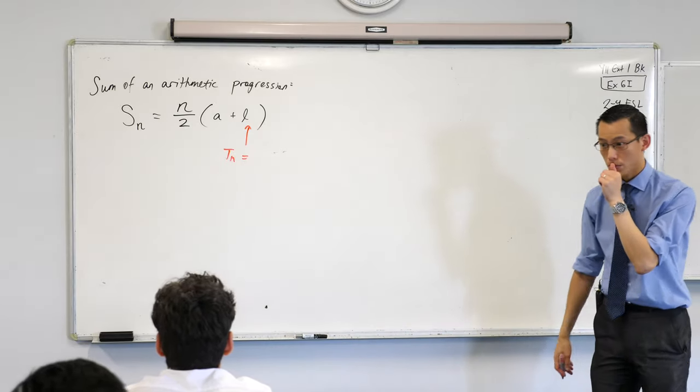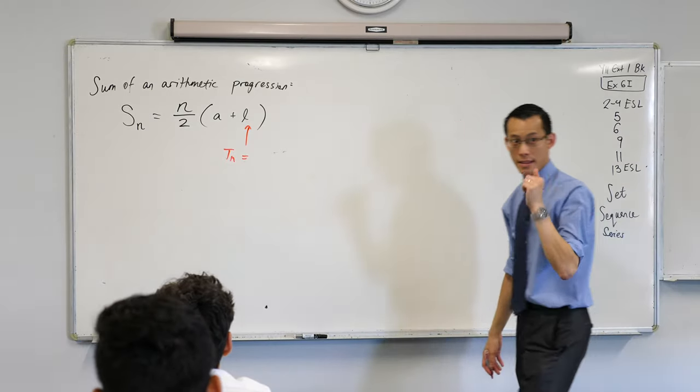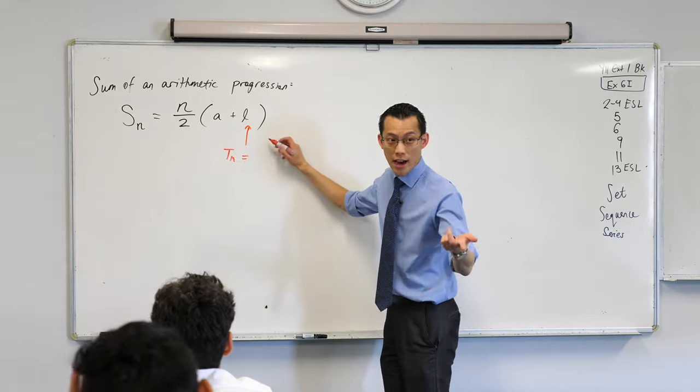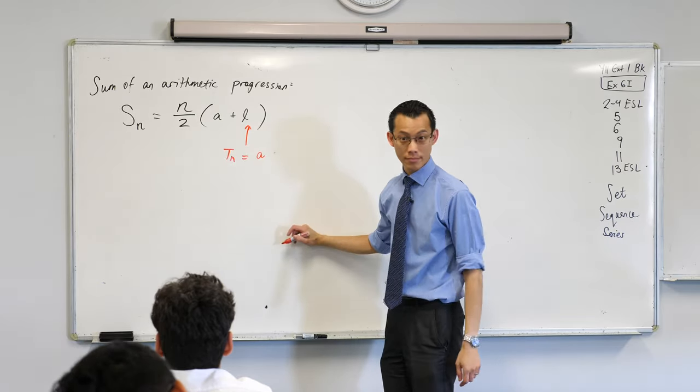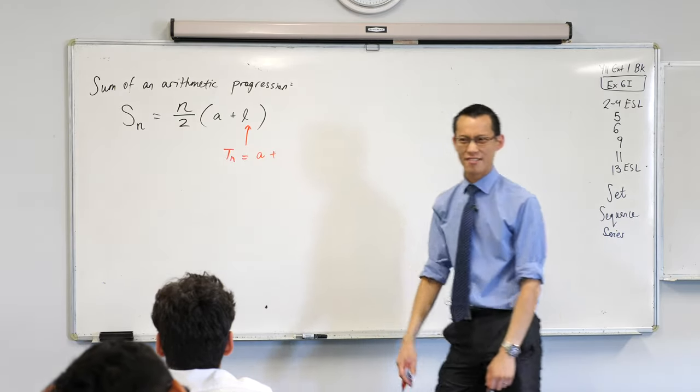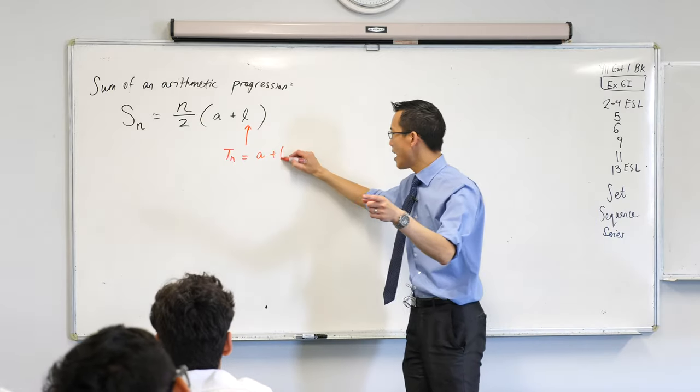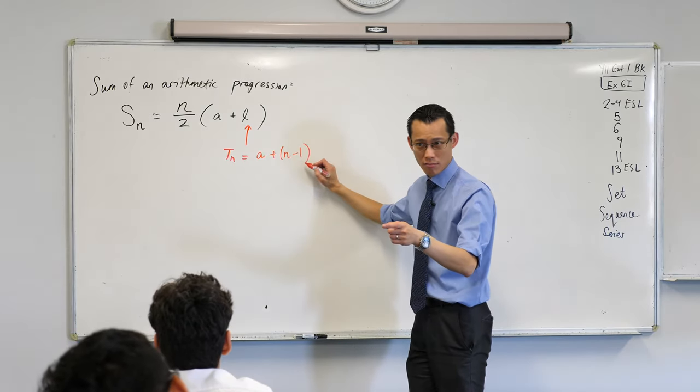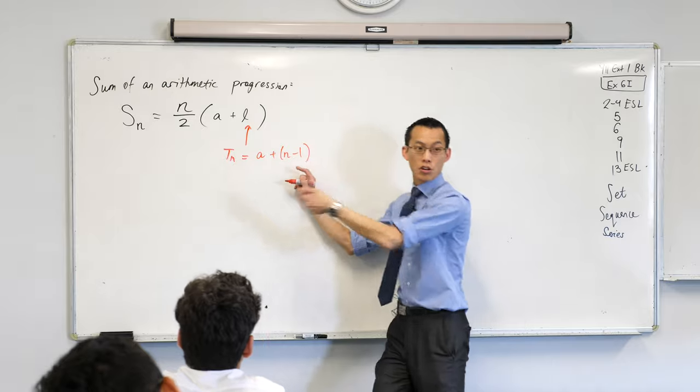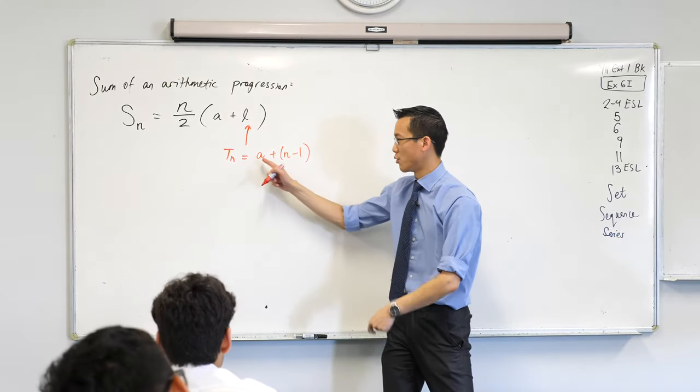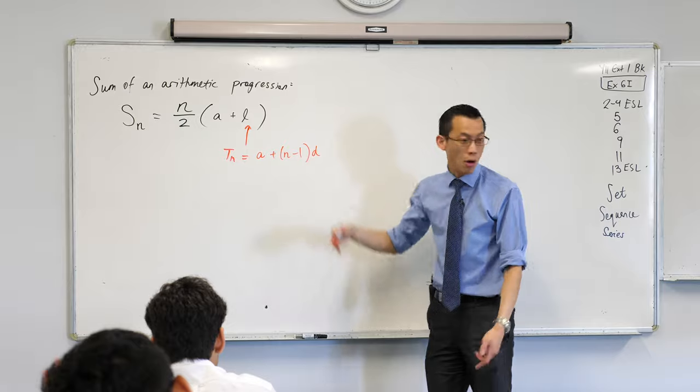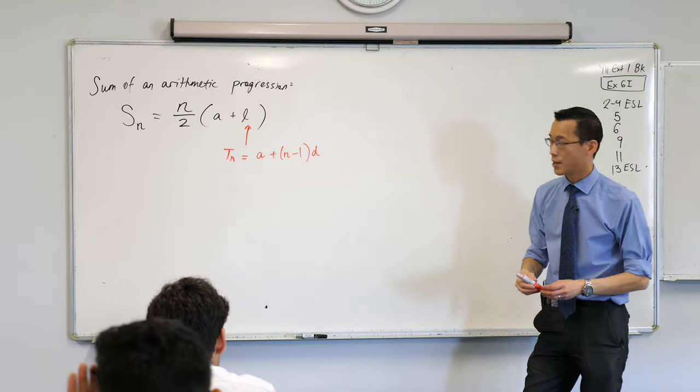You always start with the first term. Plus, what do we add on to that? Very good. Now why is it n minus one? It's how many terms along you are. You take away one because you're not counting the first term and then you multiply that by that common difference that we outlined before.